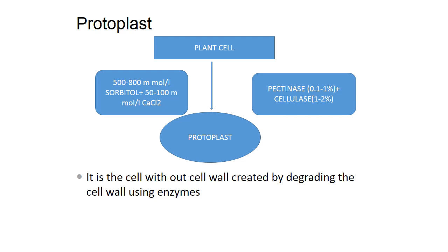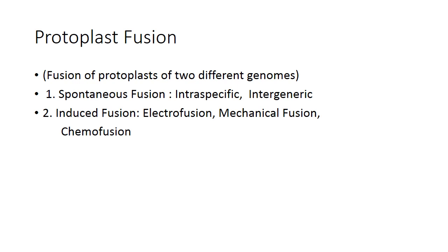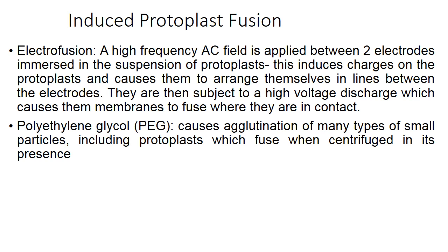For fusion of two protoplasts of different genomes: one method is spontaneous fusion (interspecific or intergeneric); another is induced fusion using electrofusion, mechanical fusion, or chemofusion. In electrofusion, a high-frequency AC electric field is applied between two electrodes immersed in a suspension of protoplasts, inducing charges that cause protoplasts to arrange in lines between electrodes, then a high-voltage discharge causes their membranes to fuse. In the PEG (polyethylene glycol) chemo-induced method, PEG causes agglutination of protoplasts, which fuse when centrifuged in its presence.